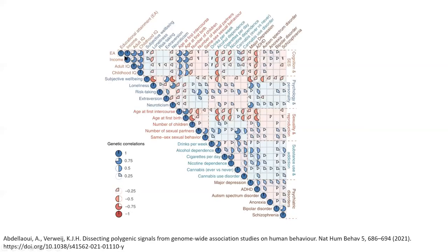Here we see a correlation heat map that shows genetic overlaps between things like behavioural traits, psychiatric disorders, cognitive ability, and other things. Zooming in on one example: ADHD has some negative correlations with IQ and income genetically speaking, and has some positive correlations with behavioural traits like risk-taking, sexual and substance behaviours, but also with depression and loneliness. It raises so many interesting questions, and our challenge as scientists is to work out what these associations mean and what the causal pathways are.